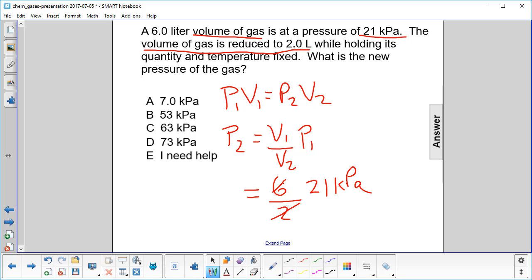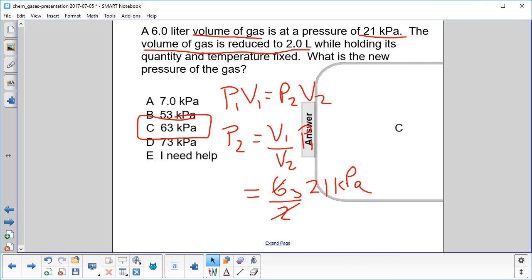2 goes into 6, 3. 3 times 21, 63. So the answer is 63 kilopascals.